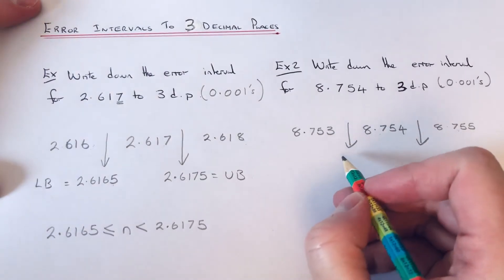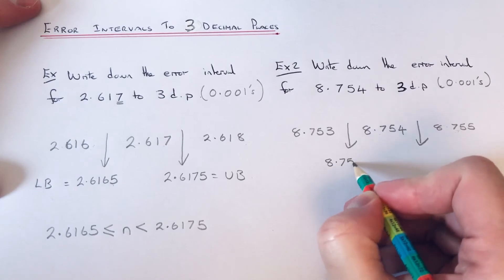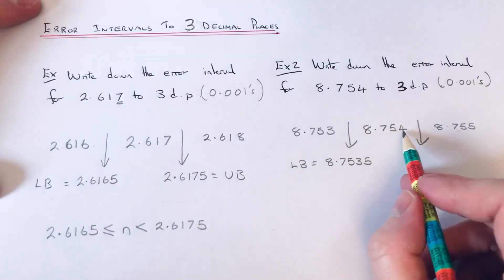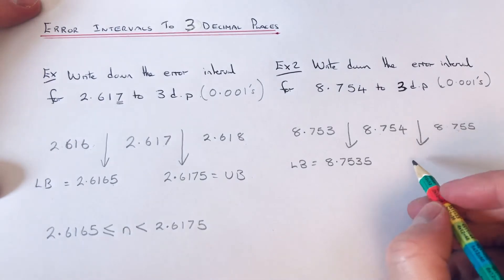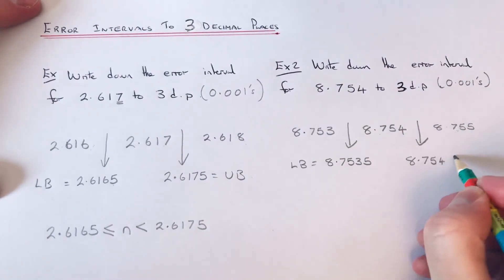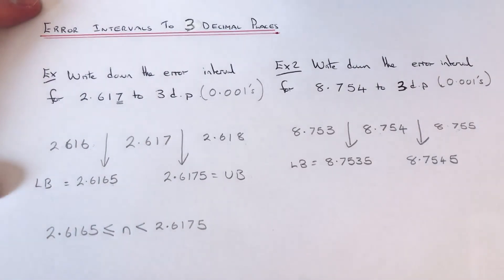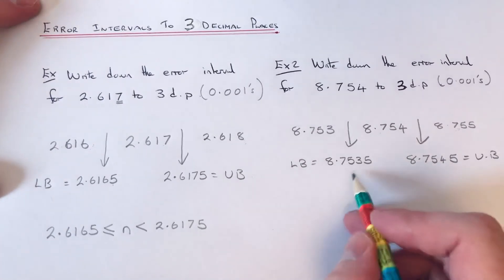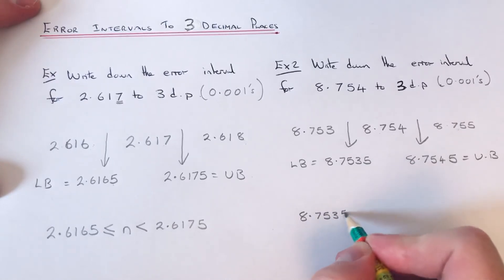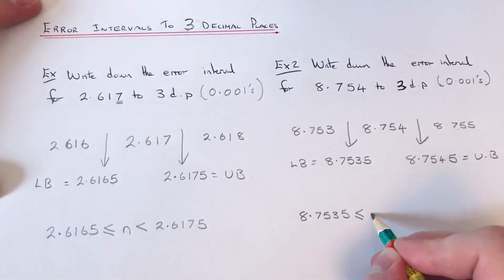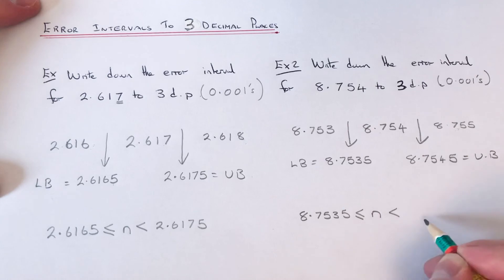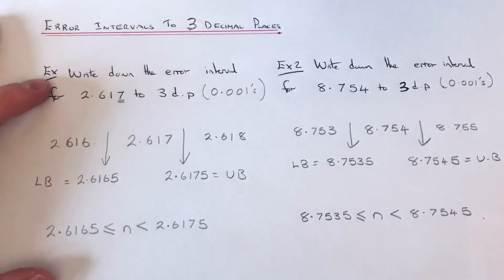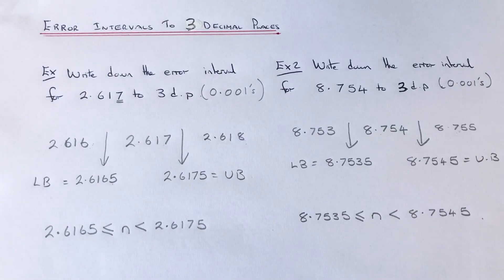We find our lower and upper bounds by going halfway between these values. Halfway between 8.753 and 8.754 is 8.7535 — that is our lower bound. Halfway between 8.754 and 8.755 is 8.7545 — that is our upper bound. Notice I just put a five on the end. So the error interval is: 8.7535 ≤ n < 8.7545. Make sure you like and subscribe, and I'll see you next time, bye bye!